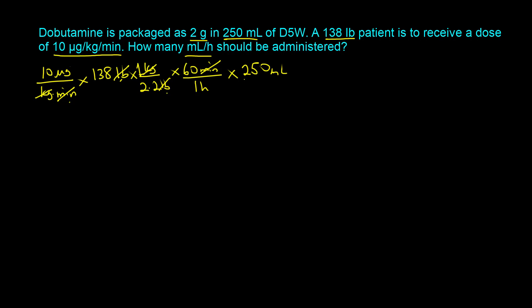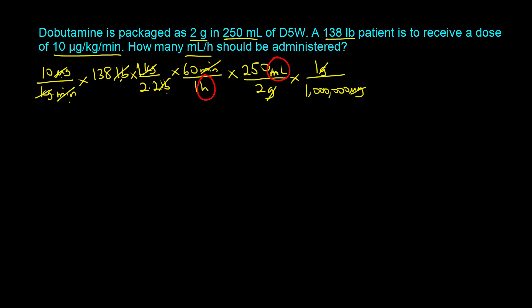We have 250 milliliters, and in that 250 milliliters there are 2 grams. Now we need to get rid of the micrograms, but micrograms and grams are not consistent in units, so we need to convert grams to micrograms: 1 gram equals 1 million micrograms. Now the micrograms cancel out, the grams cancel out, and our units are now milliliters per hour.